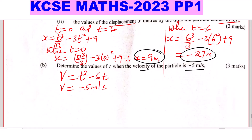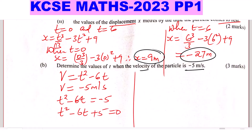So t squared minus 6t equals negative 5. Bring negative 5 to the left-hand side: t squared minus 6t plus 5 equals 0. You notice this forms a quadratic equation. To factorize, you're looking for two numbers whose product is 5 and sum is negative 6.